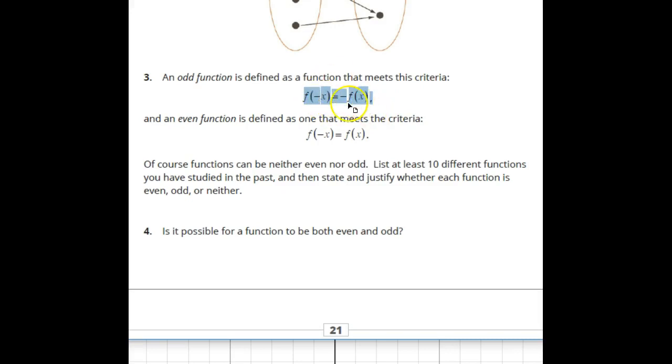If you substitute a negative x and you get a negative function value, not necessarily just a negative function value, but a negative of the original function, it's considered odd. And you get an even function if you substitute a negative x in for all negative x, you get the original function back in return.